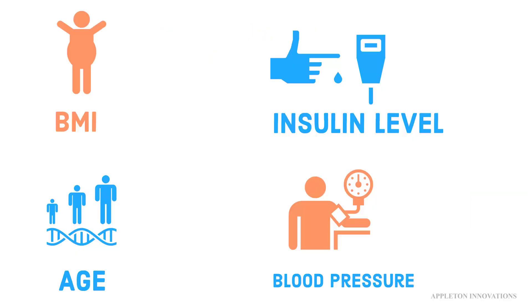The dataset consists of several medical predictor variables and one target variable, outcome. Predictor variables include the number of pregnancies the patient has had, their BMI, insulin level, age, blood pressure, and so on.